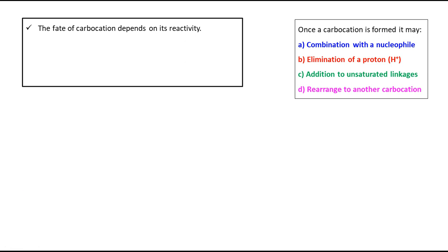In general, once the carbocation is generated, there are four possibilities. First, combination with a nucleophile — the nucleophile, which is electron rich, can attack the carbocation. Second, elimination of a proton — H⁺ will be removed from the carbocation and we will get a neutral species. Third, addition to unsaturated linkages — a double bond or triple bond where pi electron density can be attracted toward the positive charge. Fourth, rearrangement to another carbocation — where the existing carbocation rearranges to a more stable one.